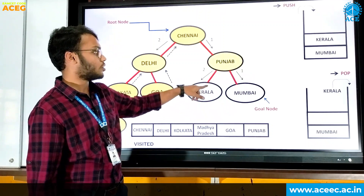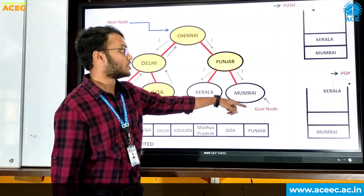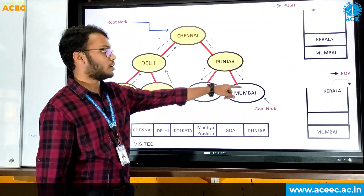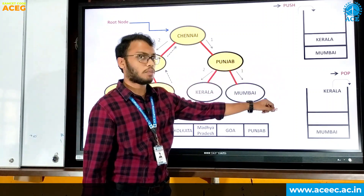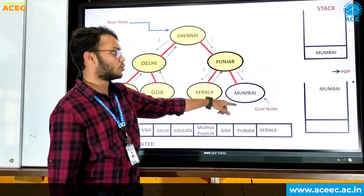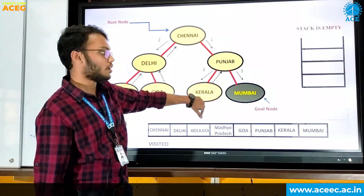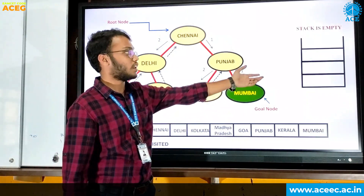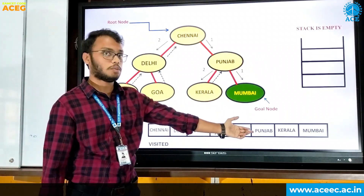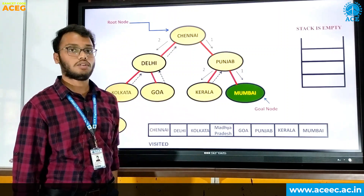The adjacent nodes of Punjab are Kerala and Mumbai. First we will push Mumbai into the stack and then Kerala. Kerala will be at the top of the stack, so Kerala will be popped out. After Kerala, we will backtrack and move to Mumbai. Mumbai will be at the top of the stack, so we will pop Mumbai. Finally our stack will be empty. Our initial node is Chennai and our goal node is Mumbai, so we visit all the nodes and reach the goal node.